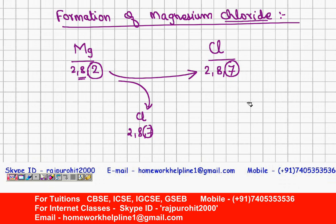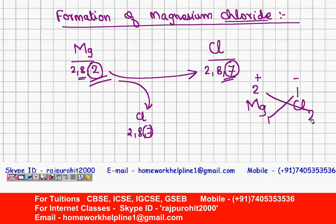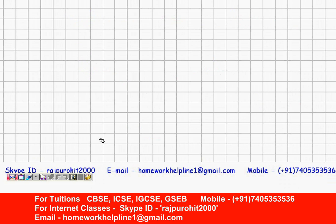Before the diagram, let's also consider this with the help of valency. Magnesium has 2 electrons so its valency is 2+. Chlorine is taking 1 electron so its valency is 1−. When you exchange these valencies, the formula of magnesium chloride is MgCl₂.